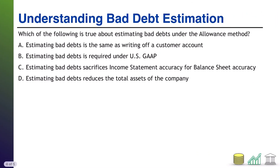Last one: understanding bad debt estimation. Which of the following is true about estimating bad debts under the allowance method? Four options — again, it could be one, could be more than one. Take a moment, try it yourself. Come on back when you're ready and I'll walk through the solution.